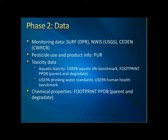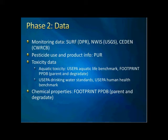We have a very comprehensive database used in the program. I think we have the most comprehensive database for monitoring data, including three major databases in the world for California: the DPR database, the USGS National Water Quality System, and the database by the Water Board. For pesticide use and product information, we use the PUR data. For toxicity data, including those used in phase one, we also include toxicity data for degradates based on the Footprint database. We also include the USEPA drinking water standards and USEPA human health benchmarks. For chemical properties, we mainly rely on the Footprint database for both degradates and parent compounds.